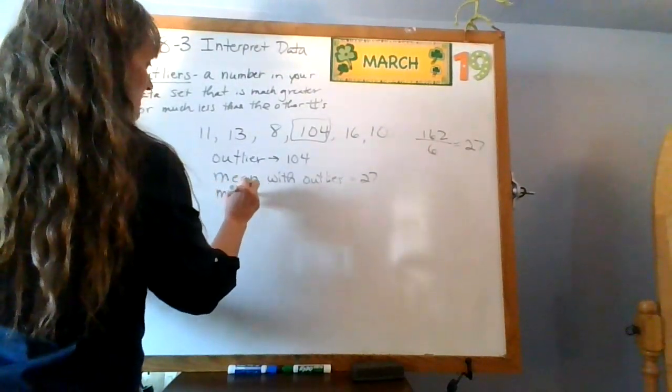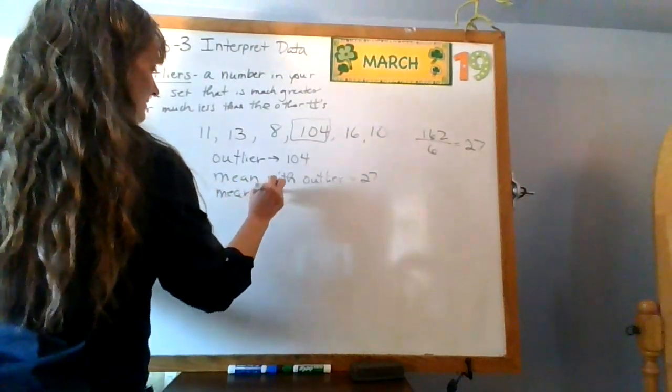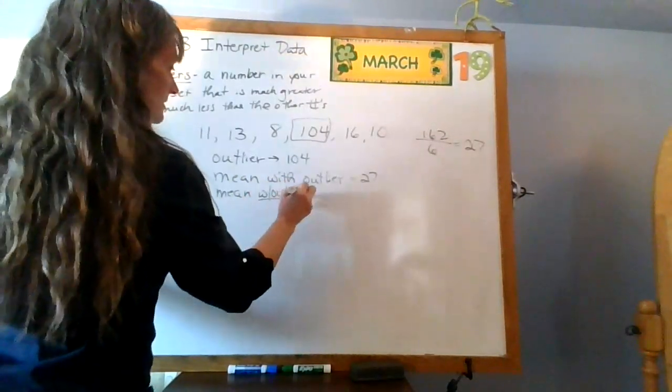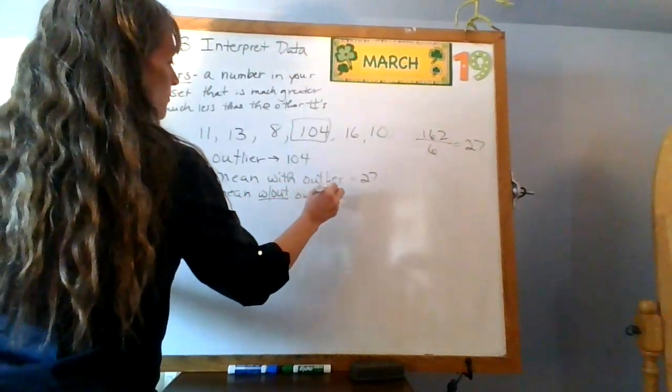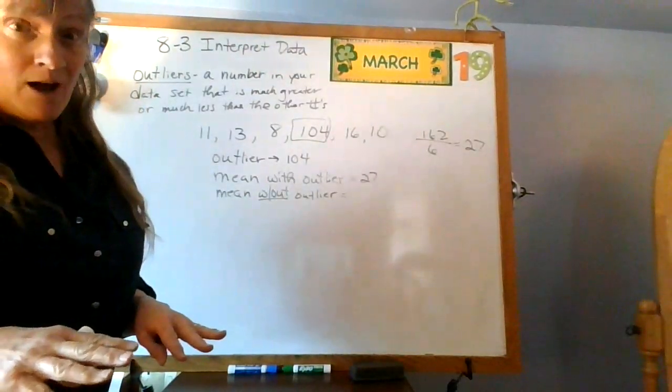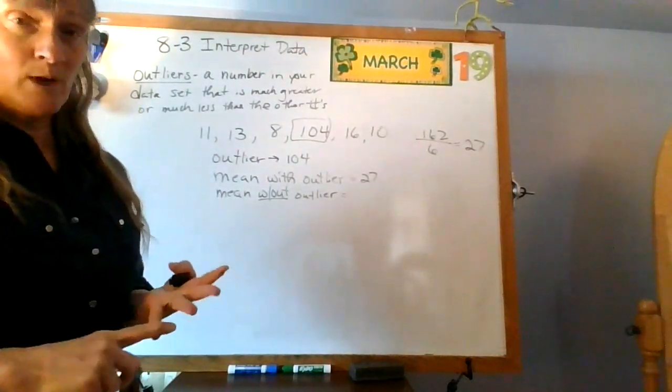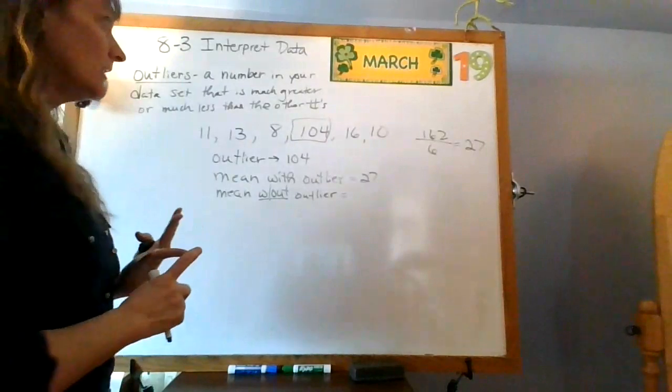So now I'm going to try my mean without, without the outlier. So, today, when you're doing this, you're going to have to really read well. Does it say outlier, with outlier, or with outlier, outlier?